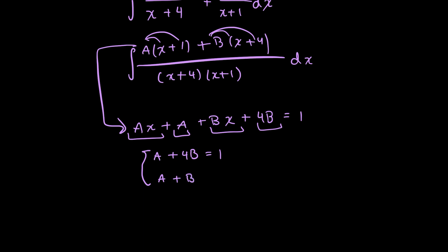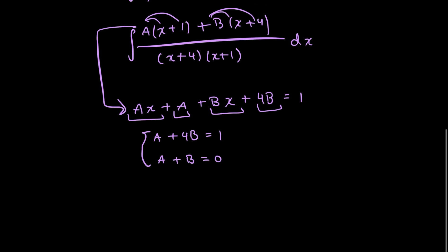However, on my right-hand side, I don't have anything with a degree of 1 there. So I'll just make this equal to 0. So immediately, I could get that a is equal to negative b. And I could plug that into that first equation so that I get minus b plus 4b is equal to 1.